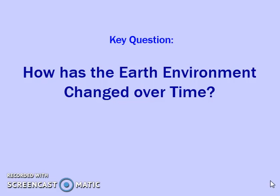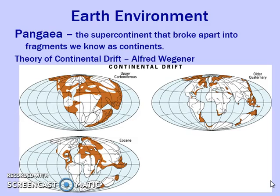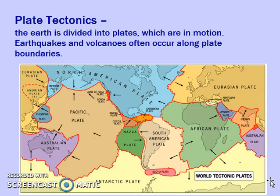We want to talk about how the earth has been impacted over time. We talk first about Alfred Wegener and his theory of continental drift, where he says that our land is on top of plates, and those plates are shifting and moving and pushing up on each other. They used to be all together as one supercontinent of Pangaea, but that was before humans started living on this earth.